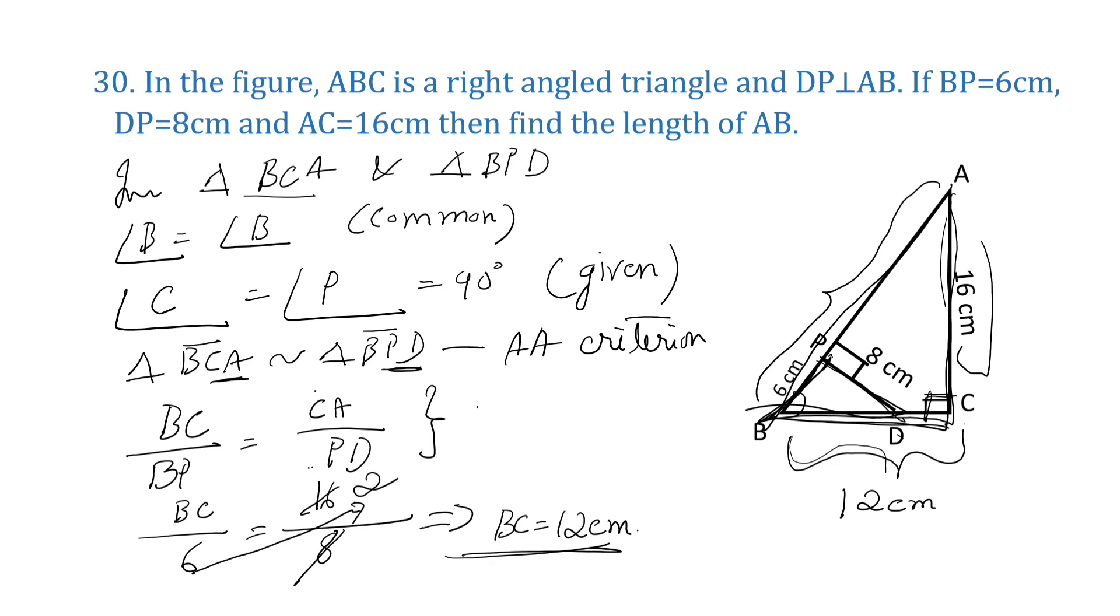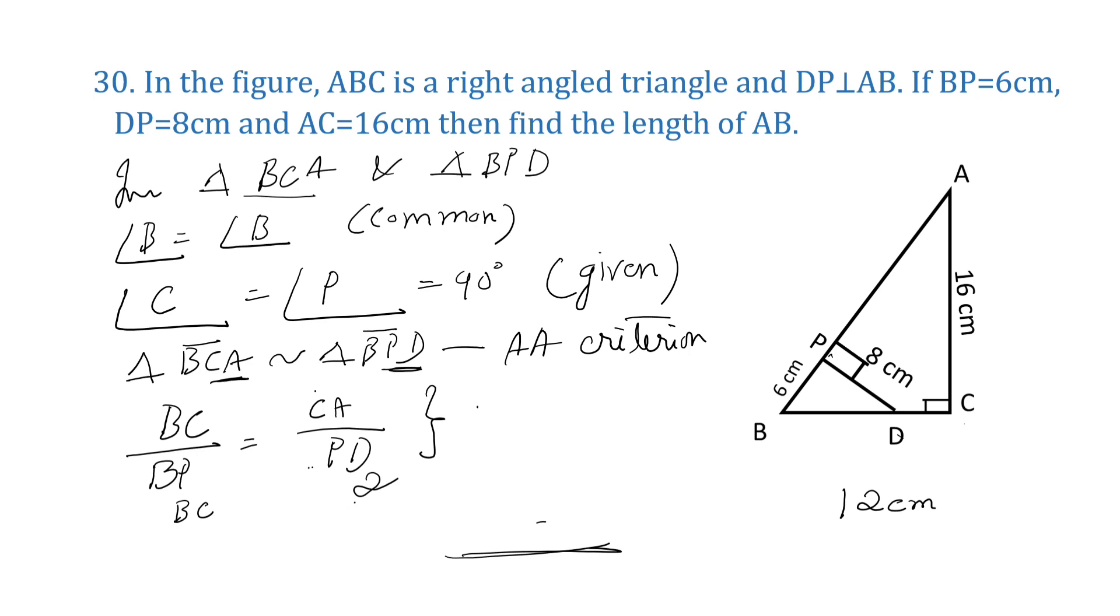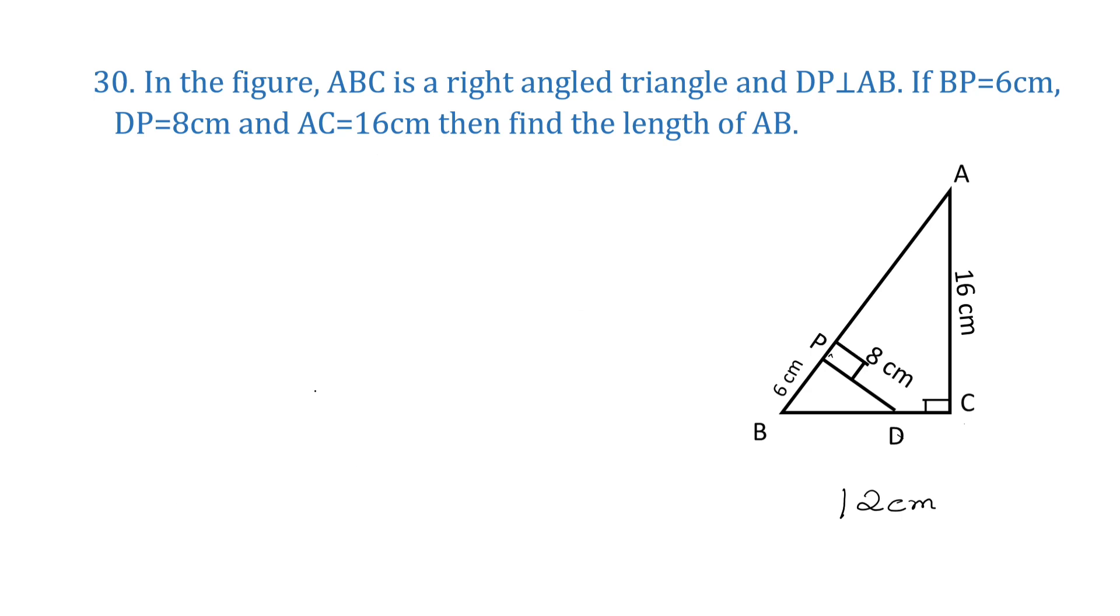BC is equal to 12 centimeters. Now our task is to use Pythagorean theorem to find out the value of AB. AC is equal to 16 centimeters and BC is equal to 12 centimeters. According to Pythagoras theorem, AB square is equal to AC square plus BC square, sum of the squares on the other two sides, by Pythagoras theorem.